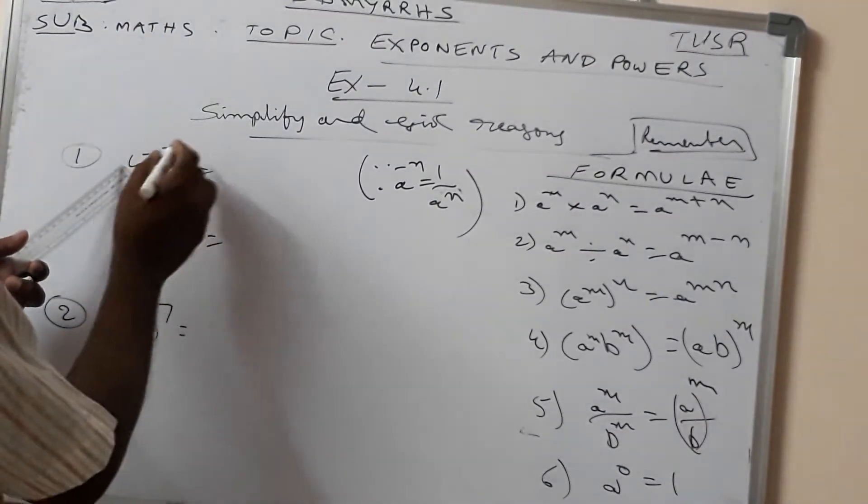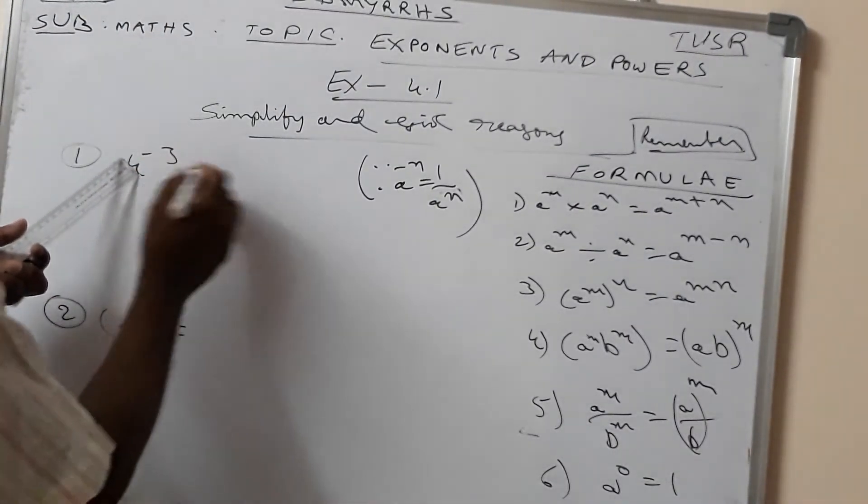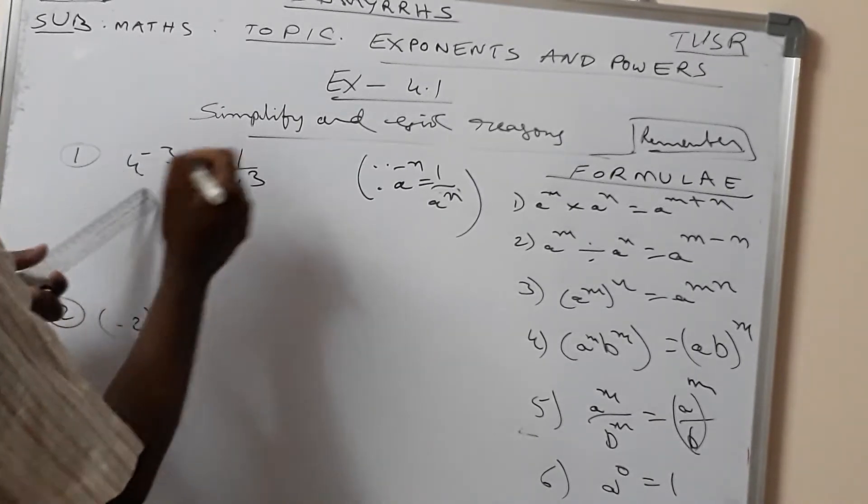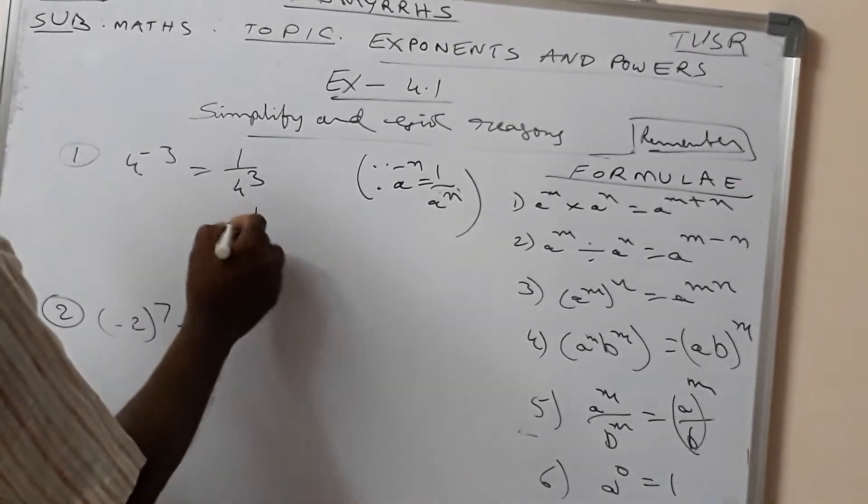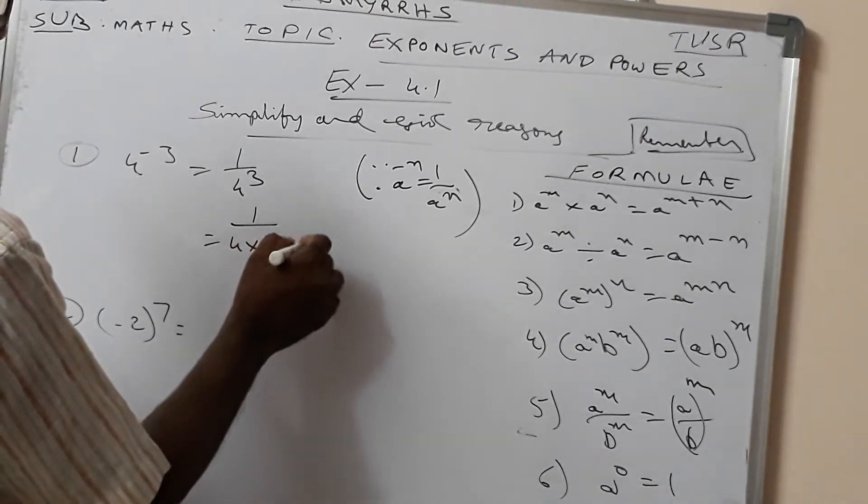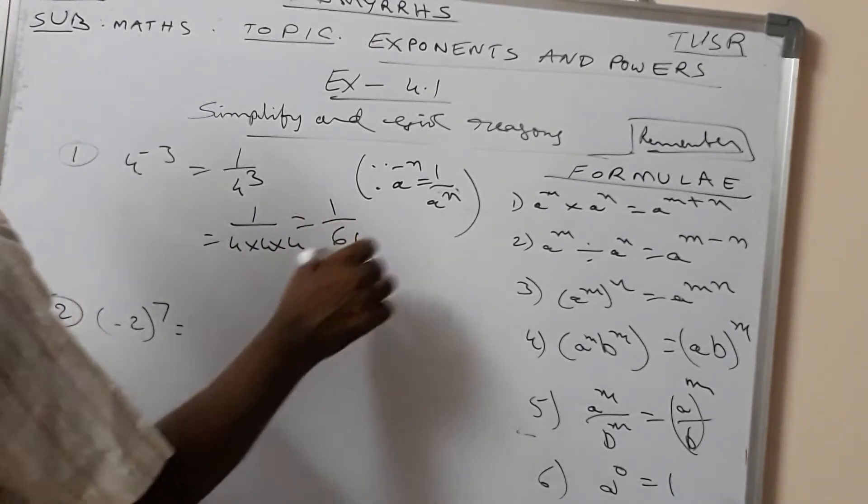Now, 4 to the power of minus 3 is equal to 1 by 4 cube. That is equal to 1 by 4 cube, means 4 into 4 into 4, which is equal to 1 by 64.